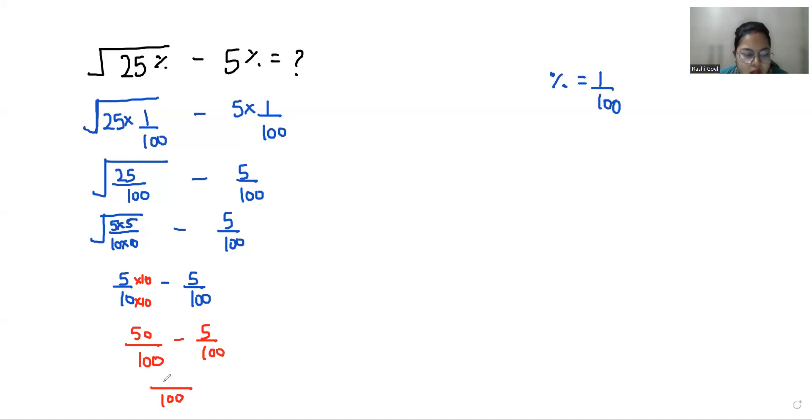So 50 minus 5 is 45 by 100. And we know that we can write it as 45 times 1 by 100. And 1 by 100 means percentage. So it is equals to 45%. I hope it's clear and you find it useful. So please give us a thumbs up and do subscribe to my channel. Stay tuned.